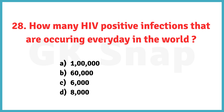How many HIV-positive infections are occurring every day in the world? The correct answer is option C: 6,000.